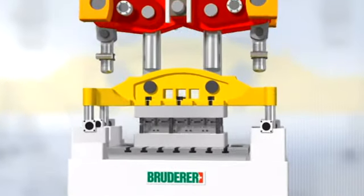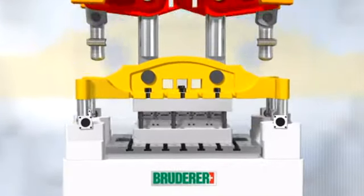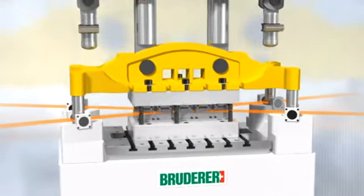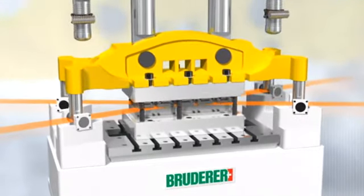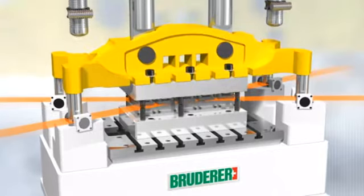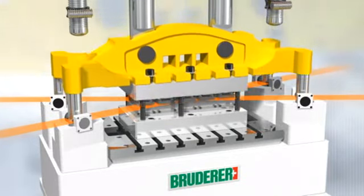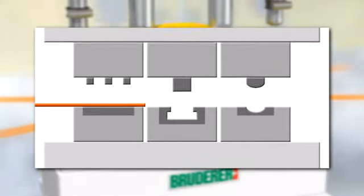Another unique feature on Bruderer high-performance automatic punching presses is the ram guide system at strip level. For design reasons, there is always off-center load due to the cutting, coining, and bending stations in the stamping dies.